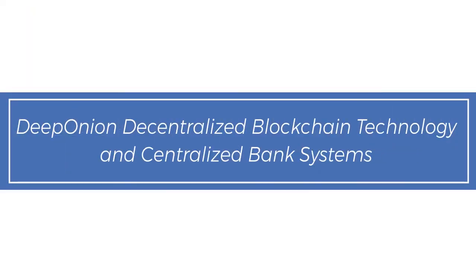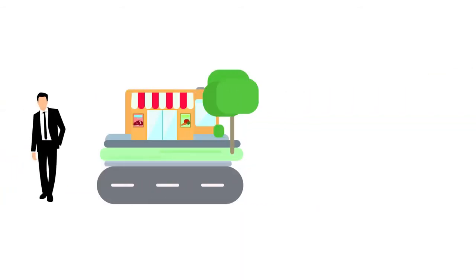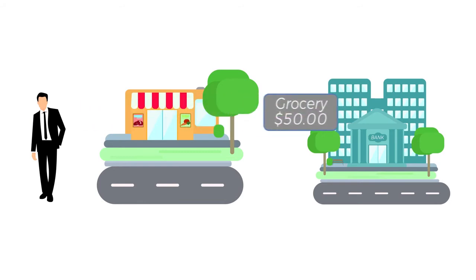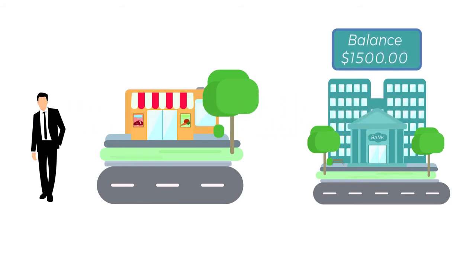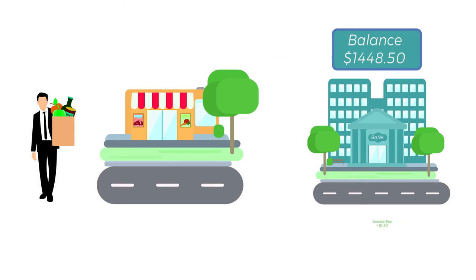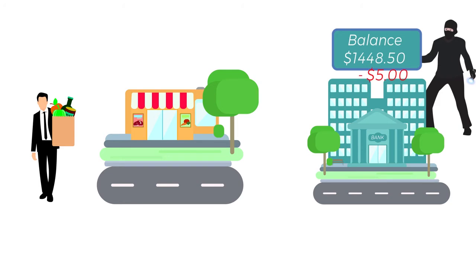DeepOnion decentralized blockchain technology and centralized bank systems. When you go to pay for something at the store using your bank card, a message is sent to the bank. The bank checks to see if you have enough money to pay for it. Then once you pay for the item, the bank records the payment to the store and decreases your balance. The bank also takes a fee for this service. In this example, we trust the bank to not change the records or do any other illegal acts.